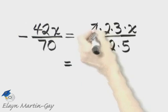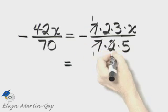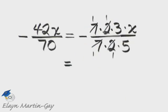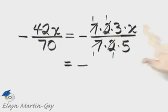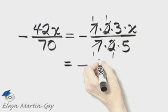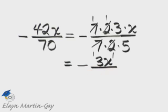Notice there's a common factor of seven, and in fact, a common factor of two. So I have negative in the numerator, one times one times three times x, so that's three x. Then in the denominator, one times one times five, or simply five. So in simplest form, I have negative three x over five.